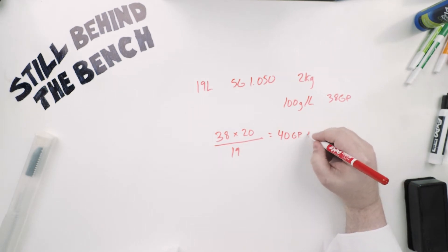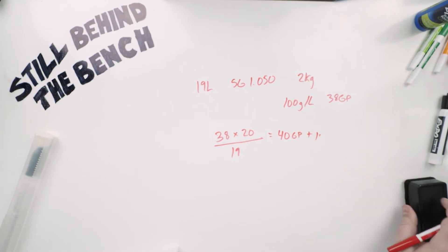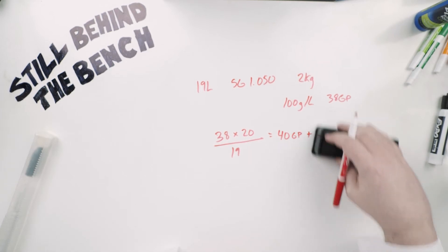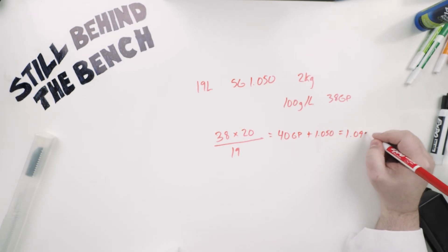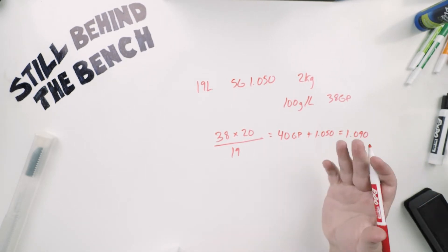You then add that to your already known starting gravity and you get 1.090. Easy.